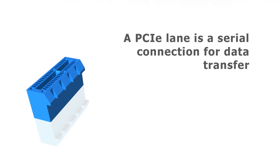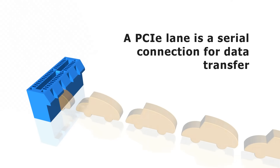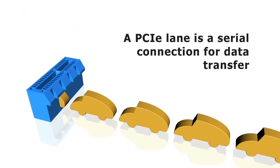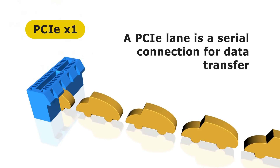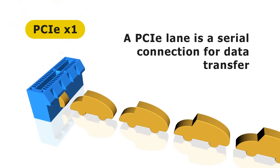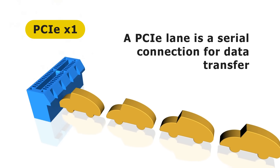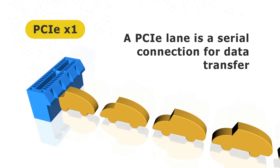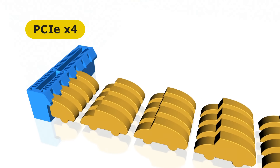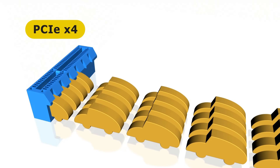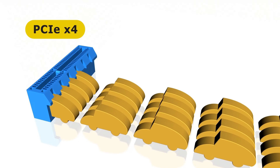Data is communicated to and from PCIe slots in what are called lanes. Imagine data as a fleet of little cars. One lane of cars traveling to a PCIe slot makes it a x1 slot, where each car represents a fixed quantity of data. If we want to get more data to the card without increasing the speed, we can add more lanes. Increasing the number of lanes by a factor of four — moving to PCIe x4 — gives us four times as many vehicles and hence four times the data transfer rate.